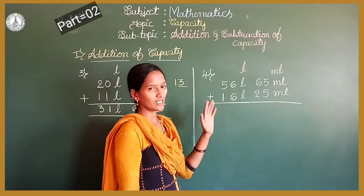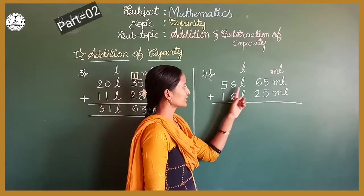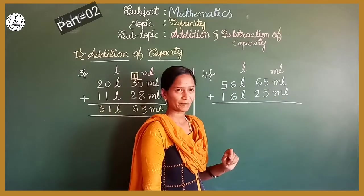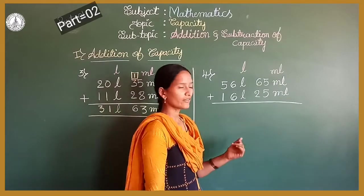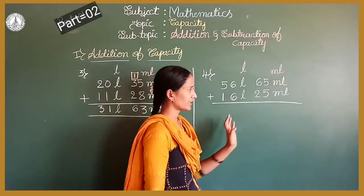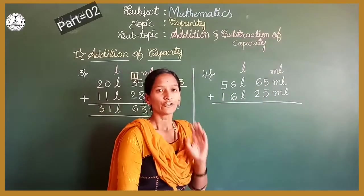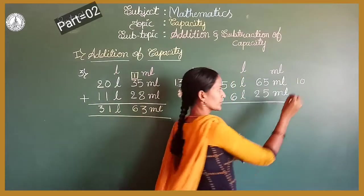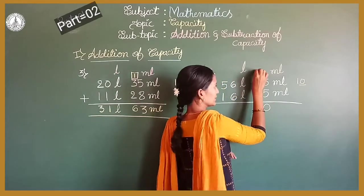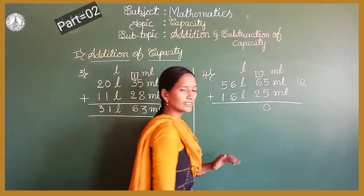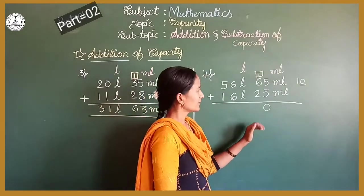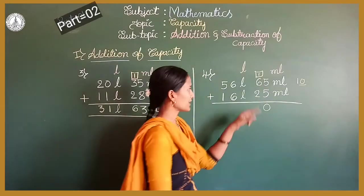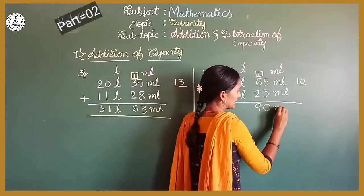Now the fourth and last problem: 56 litres 65 millilitres plus 16 litres 25 millilitres. First come to the millilitre part. 5 plus 5 is 10 — it is a 2-digit number. Write 0 here and carry 1 to the next column. 6 plus 2 is 8, plus the carry 1 is 9. So 90 millilitres.